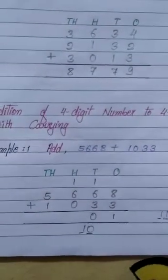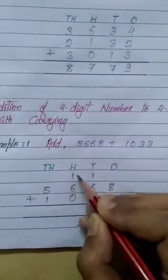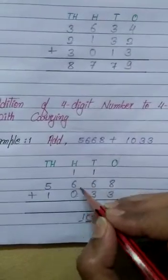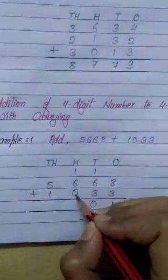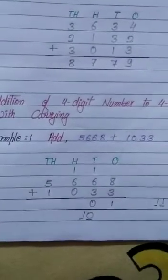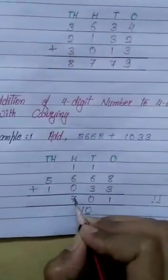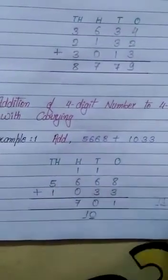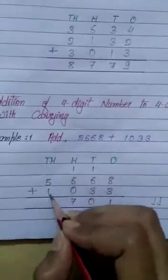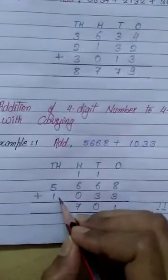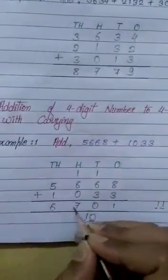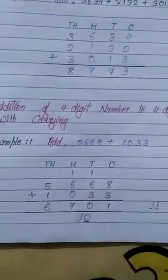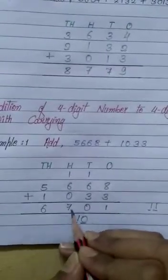Now we add 3 numbers in the 100s place: 1 plus 6 is 7, and 7 plus 0 remains 7, so I write 7 here. Now we add the 1000s place — only these 2 numbers: 5 plus 1 is 6. So the sum of these 2 numbers is 6,701.